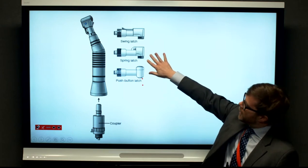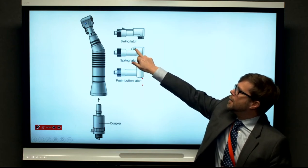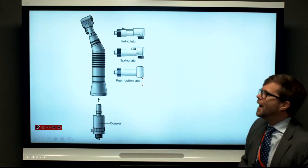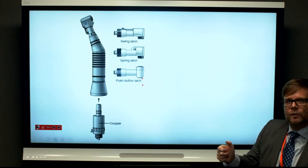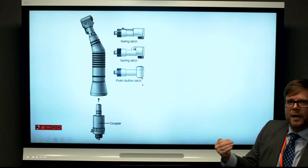There's also a spring latch where you push against the spring latch. It will allow you then to place the burr in the chuck, and then you release the pressure from the spring latch and it will spring back and lock.